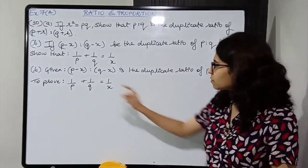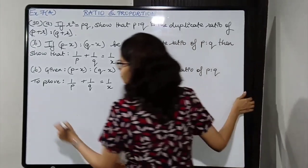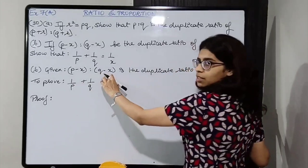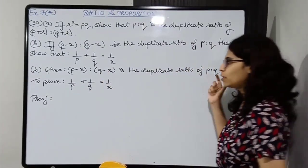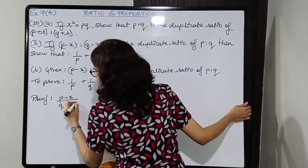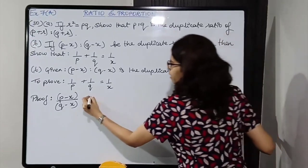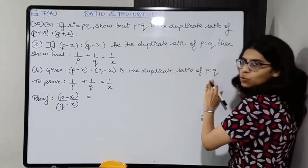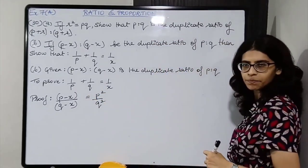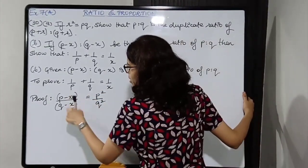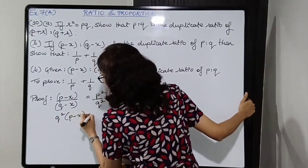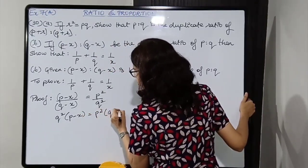Rearranging: P plus Q upon PQ equals 1 upon X. Now P plus Q upon PQ can be split as P upon PQ plus Q upon PQ — you can split the numerator but not the denominator. Cancelling P in the first term and Q in the second term gives 1 upon Q plus 1 upon P.